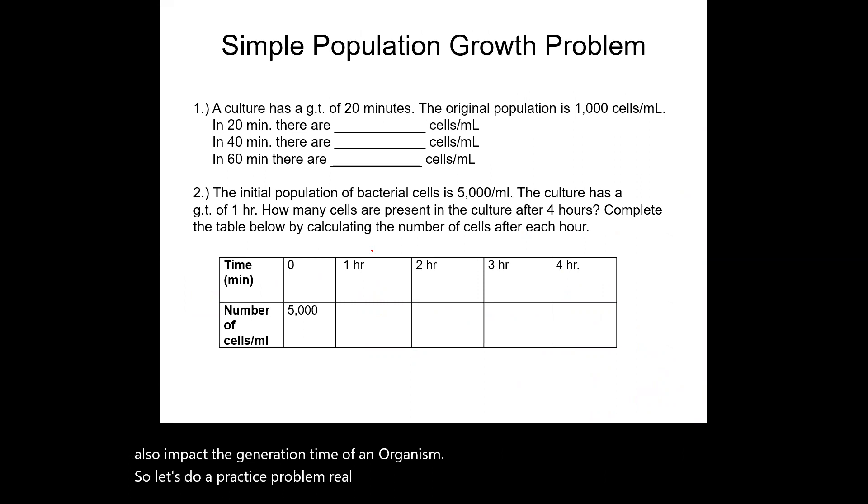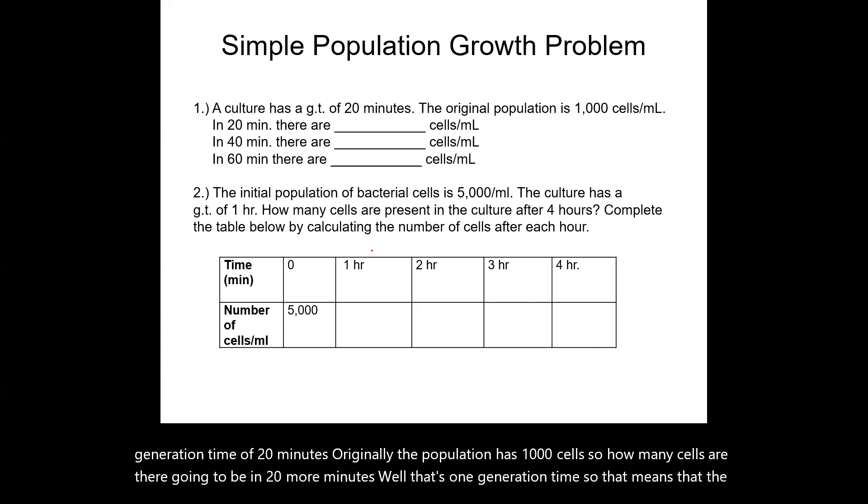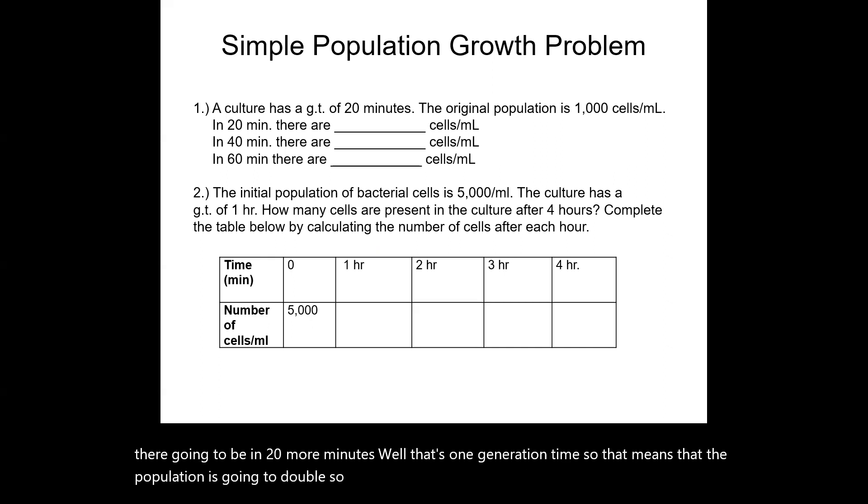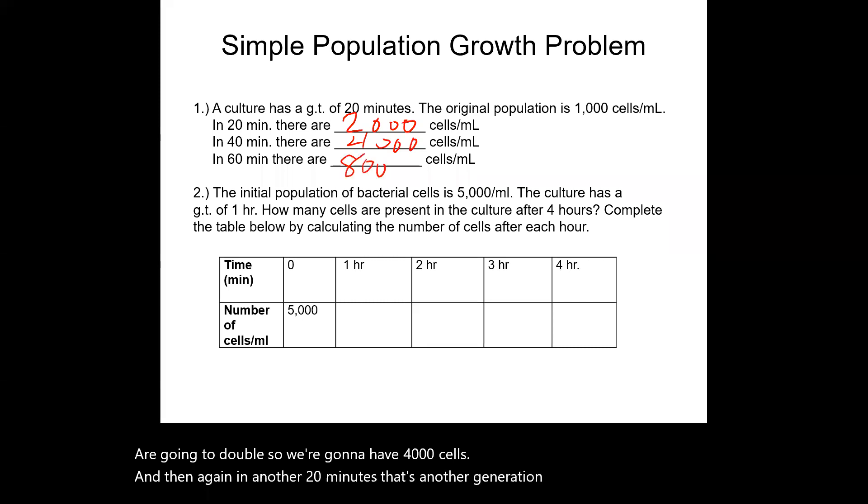So we're saying that a starting culture has a generation time of 20 minutes. Originally, the population has a thousand cells. So how many cells are there going to be in 20 more minutes? Well, that's one generation time, so that means that the population is going to double. So 1,000 times two is going to be 2,000 cells. We're now 20 minutes later, all 2,000 of those cells are going to double, so we're going to have 4,000 cells. And then again, in another 20 minutes, that's another generation time, so we'll end up with 8,000 cells.